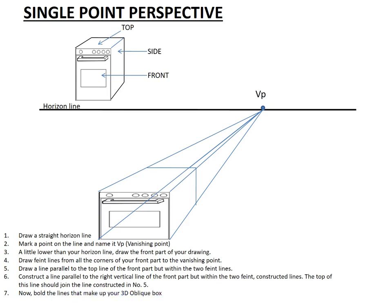Now, we go to point number seven. It says, now bold the lines that make up your 3D oblique box. It must look similar to our initial oblique drawing that we have drawn up there as our reference. Let's check as to whether it will resemble it. We bold the outside lines of our 3D drawing. There it is, looking exactly like it looks there.